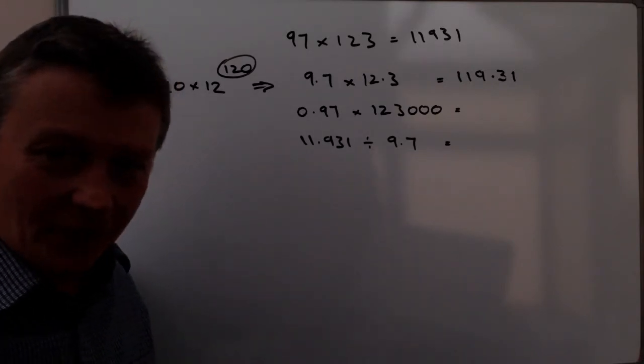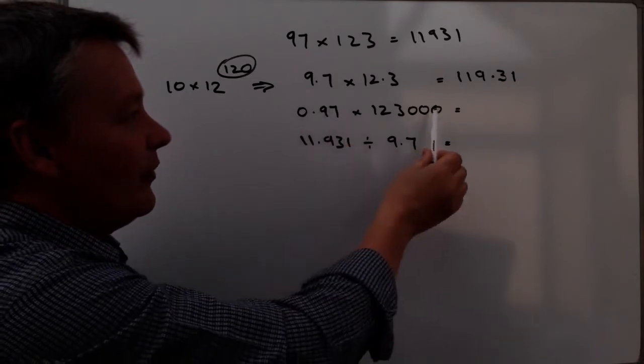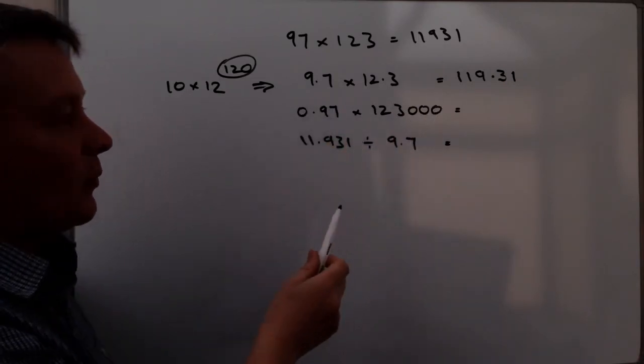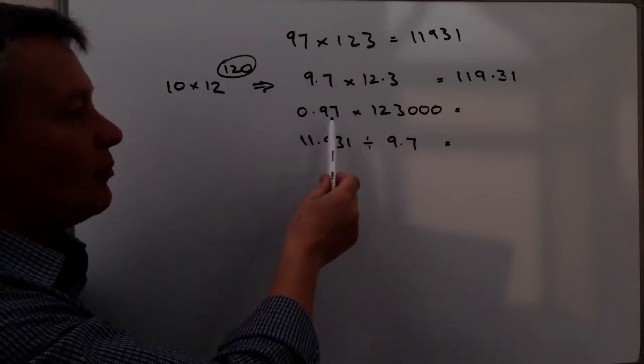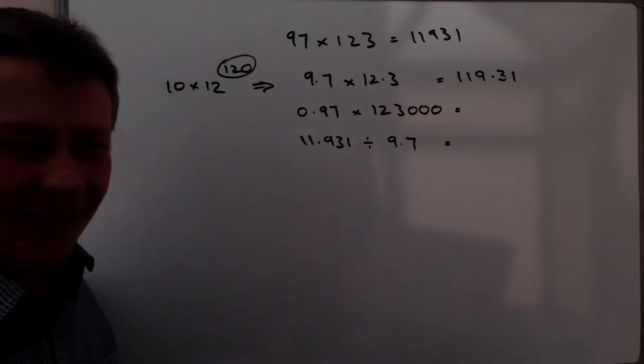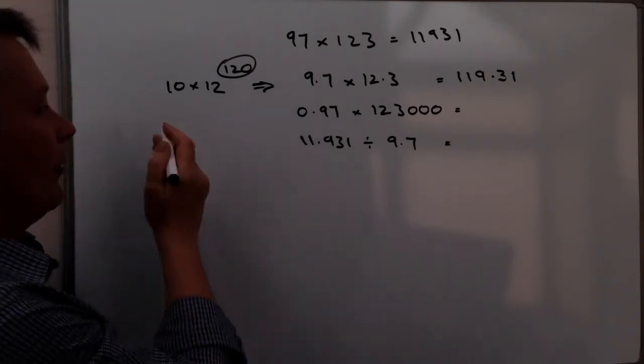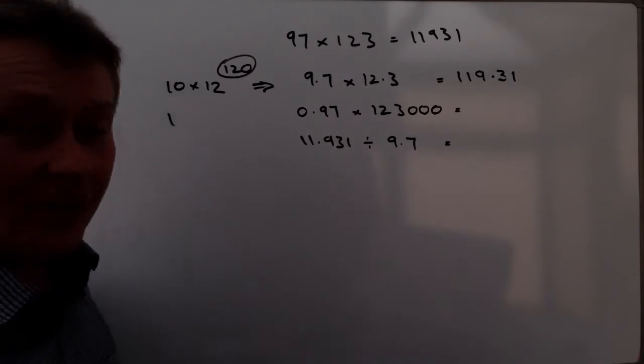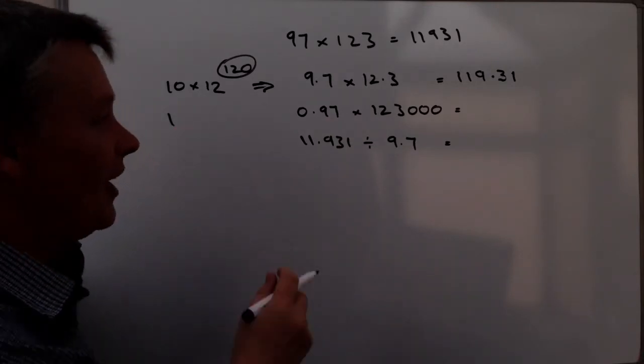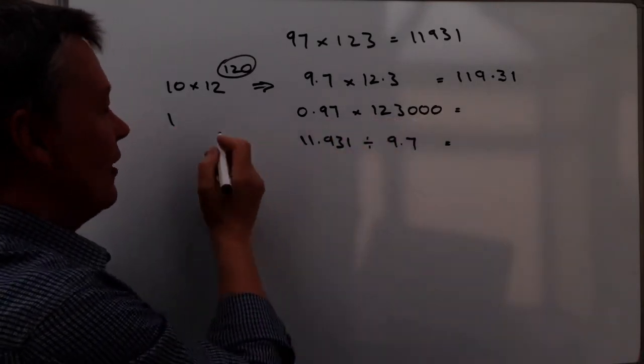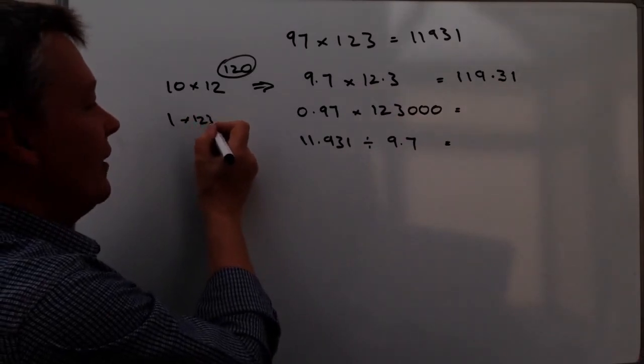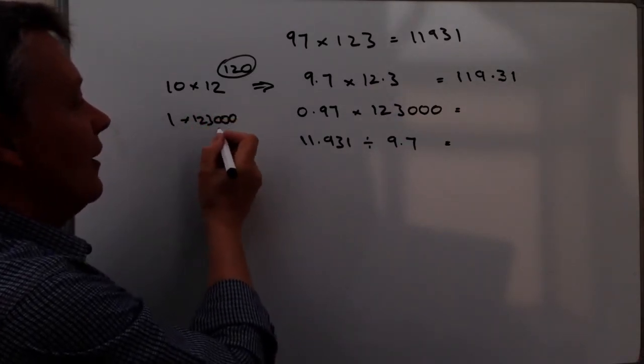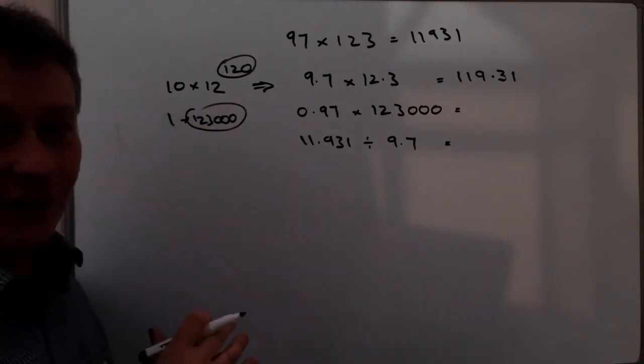I would generally tend to do the same thing with this as well. Because what I've got here, I've got 0.97. Well, that's pretty close to 1. 0.97 is really close to 1.